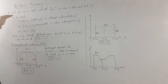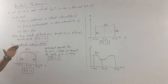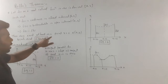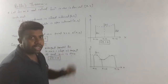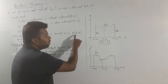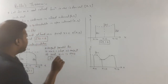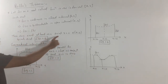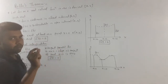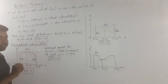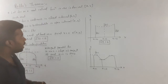If we satisfy these three conditions, then there exists at least one point x equal to c, where c is in the interval a and b, such that f dash of c is equal to zero.